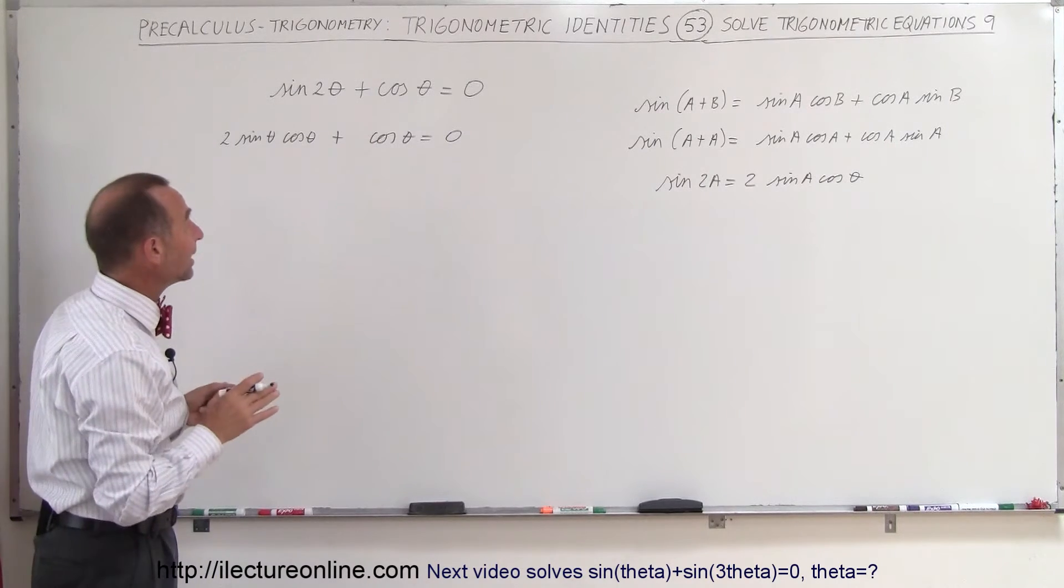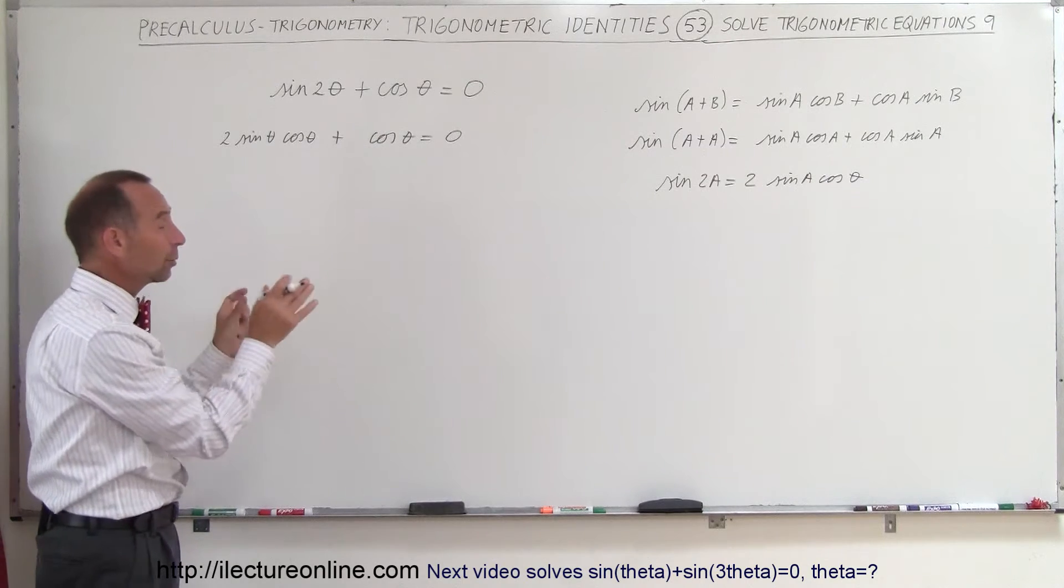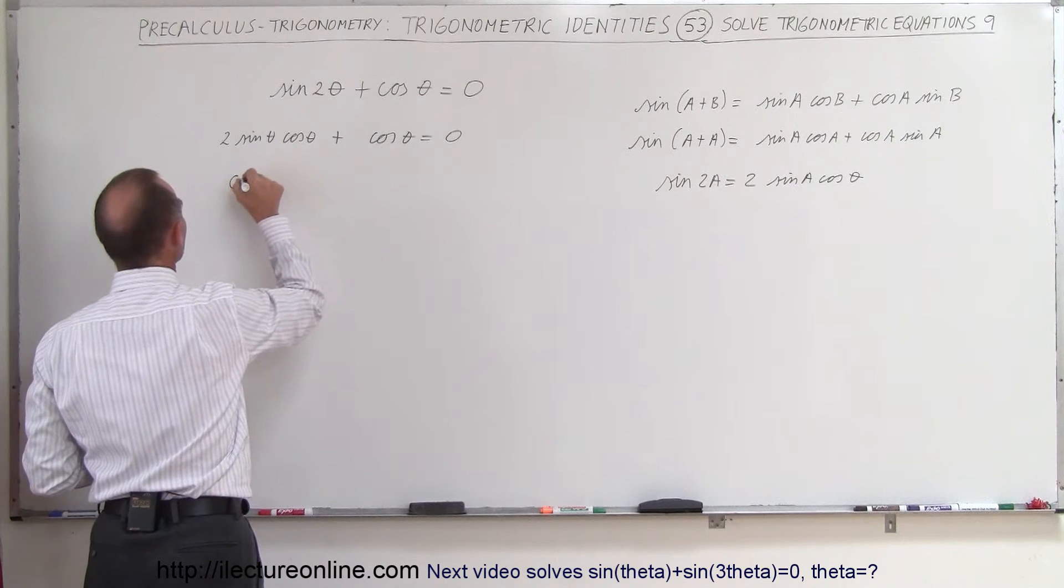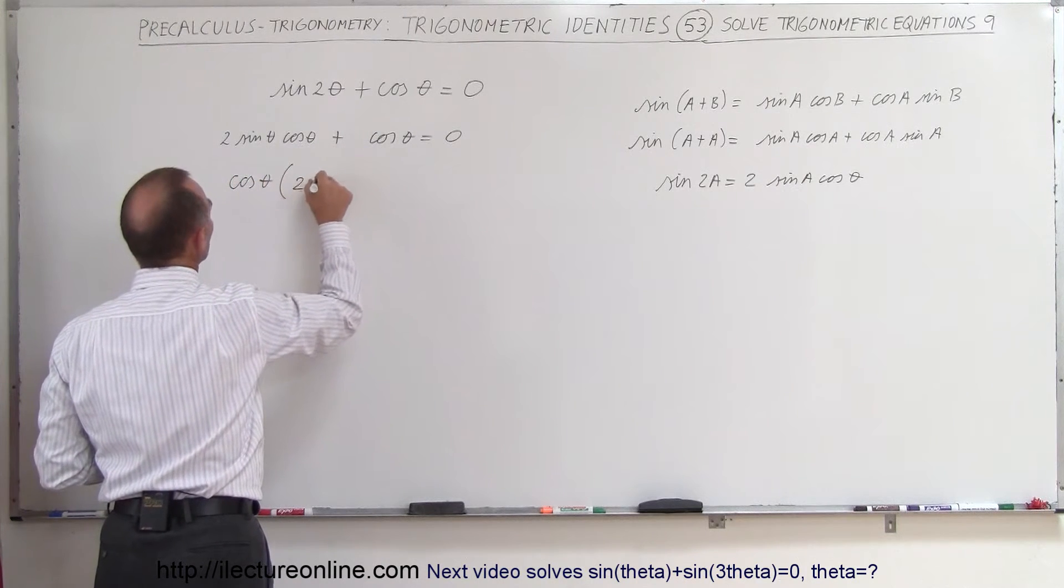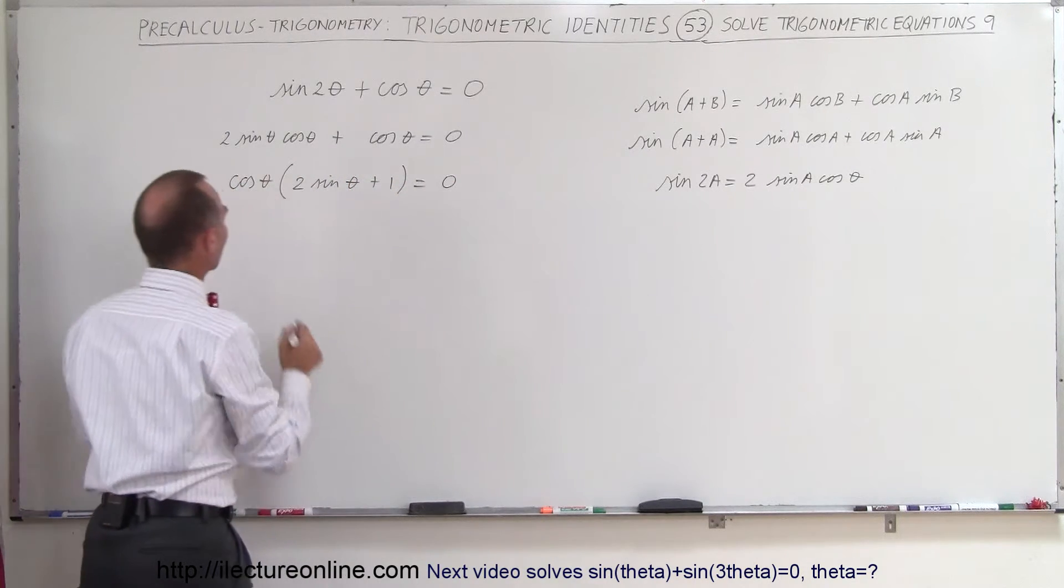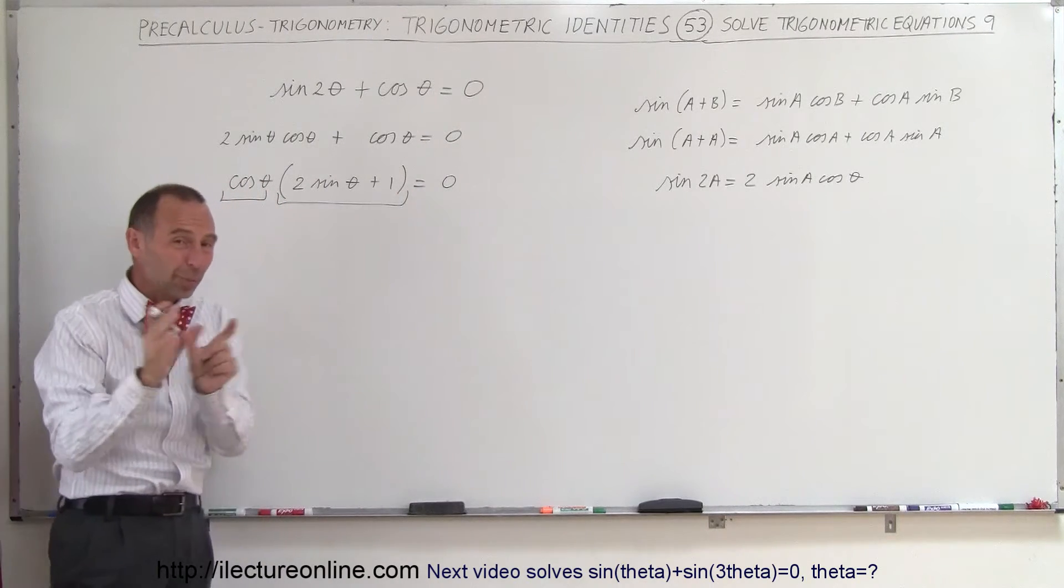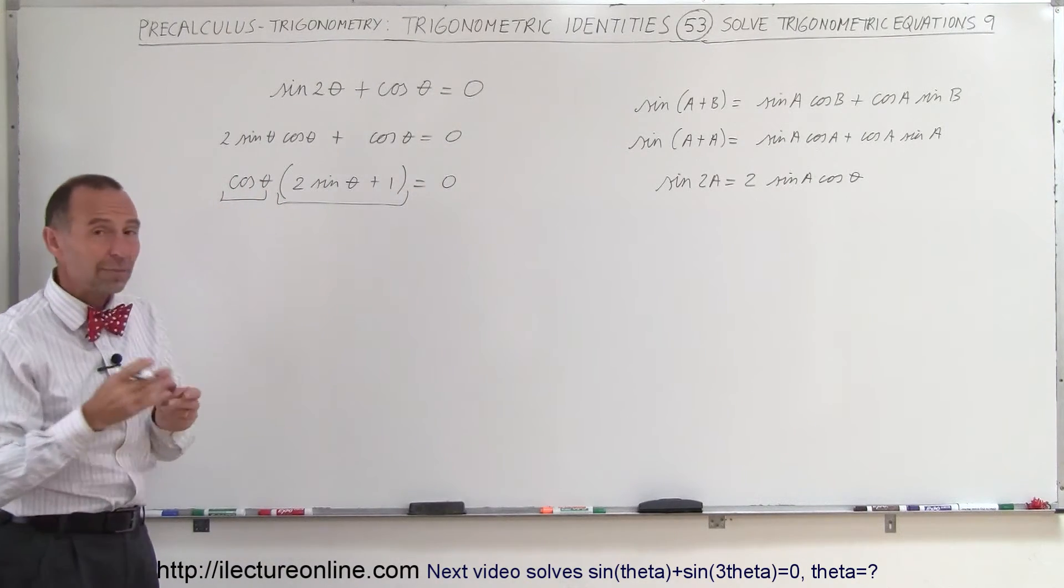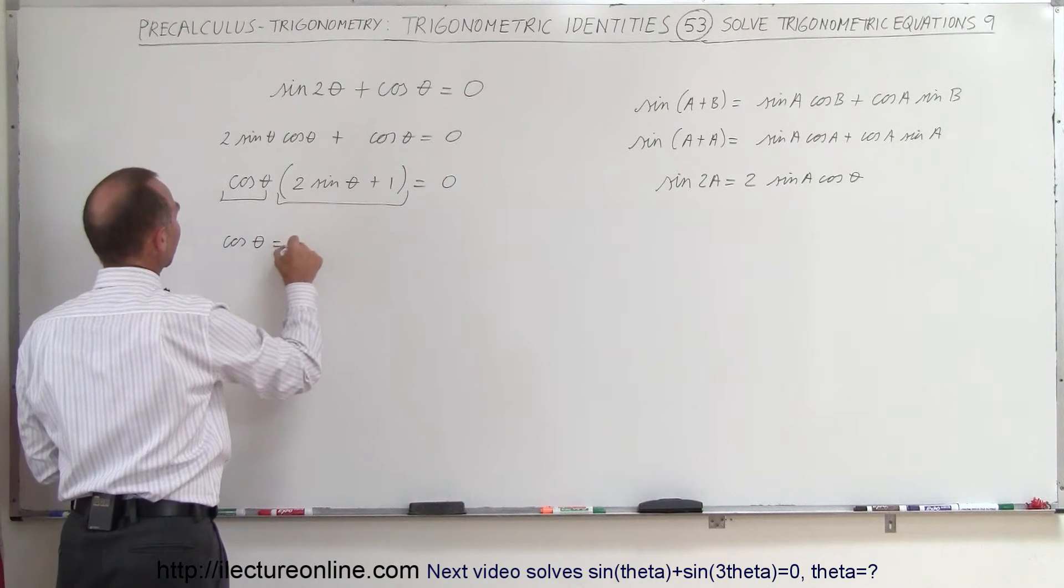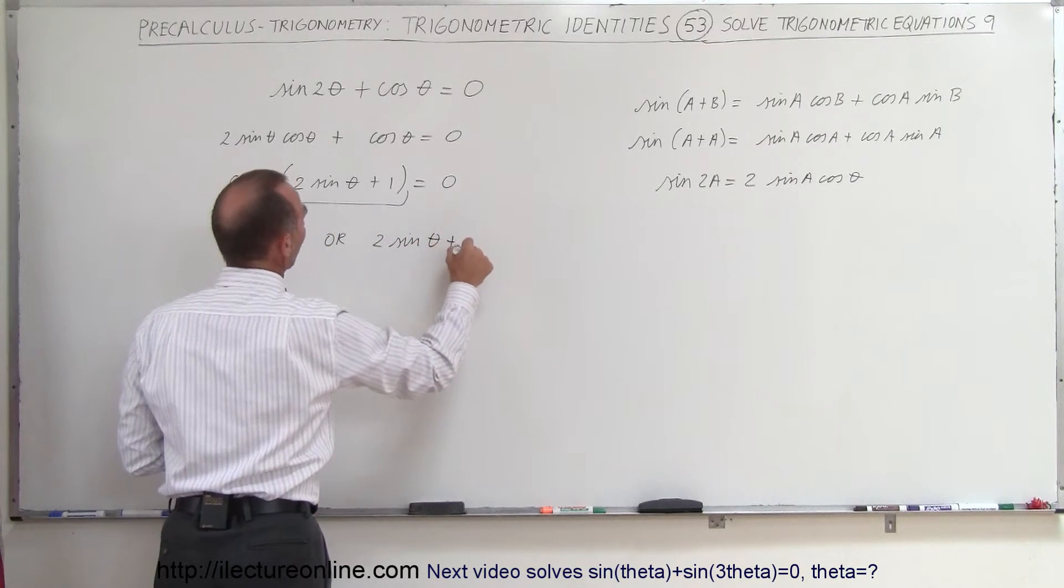Now what we can do is our old technique—we can factor out the cosine of theta and end up with a product. And when you have a product that is equal to 0, you can of course solve for each of the individual factors. So in this case we're going to factor out the cosine of theta and we end up with 2 sine theta plus 1 equals 0. And of course now we have a product—it's this multiplied times this equals 0. Whenever you have two things multiplied together and equals 0, that means one or the other must equal 0. So we can say that the cosine of theta equals 0, or 2 times the sine of theta plus 1 equals 0.